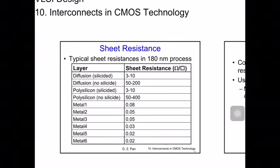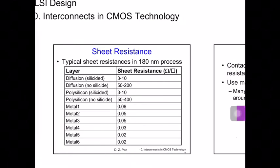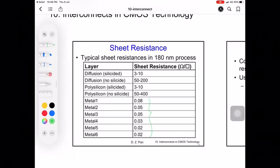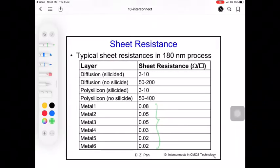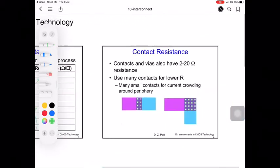Here's another example of sheet resistance for different metal layers. You can see the sheet resistance for diffusion, polysilicon, metal one through metal six. Metals have very low sheet resistance, less than 0.1 ohms per square, while polysilicon and diffusion have very high sheet resistance. So we cannot run wires using these two layers.